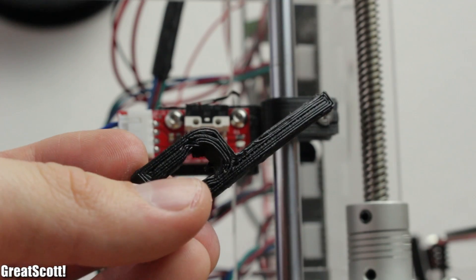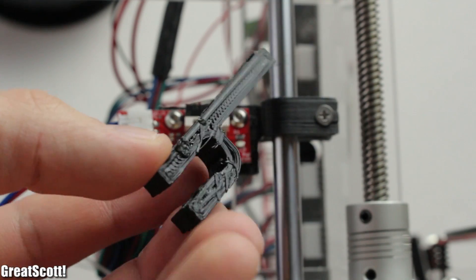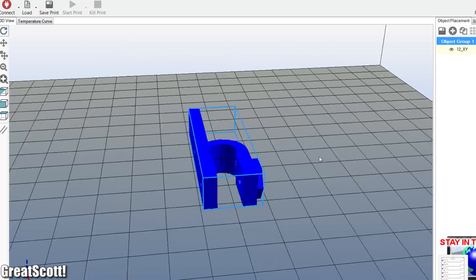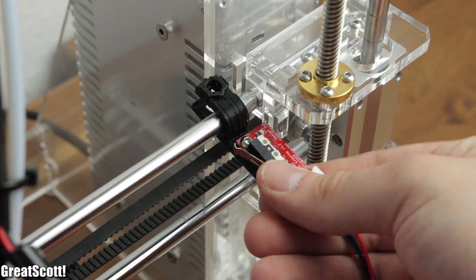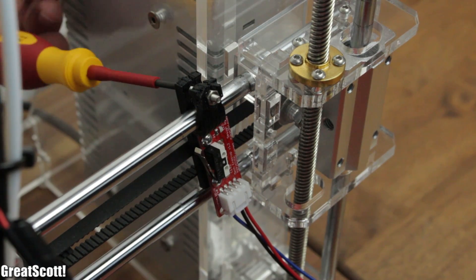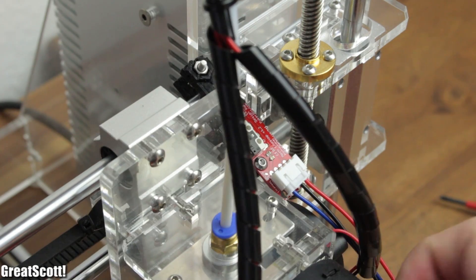But once I understood some basics of 3D printing I went ahead and printed those better clamps which the seller offers on the DVD. They work so much better and do an excellent job of securing the limit switches to a fixed position.